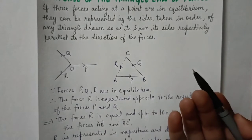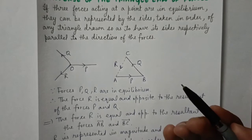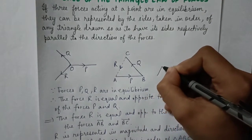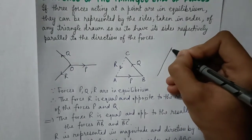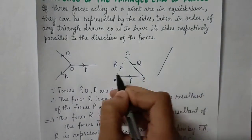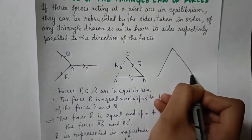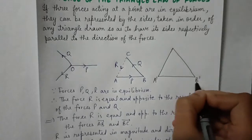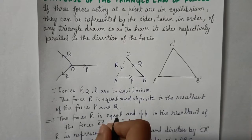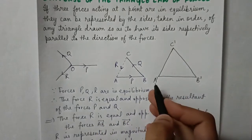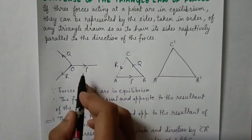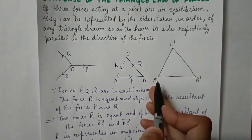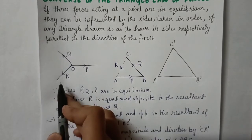Let us draw another triangle, keeping in mind that we need to draw its sides parallel to the forces respectively. Let these points be A dash, B dash, and C dash. This is a triangle in which side A'B' is parallel to force P, side B'C' is parallel to force Q, and side C'A' is parallel to force R.